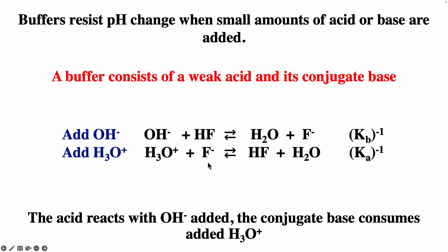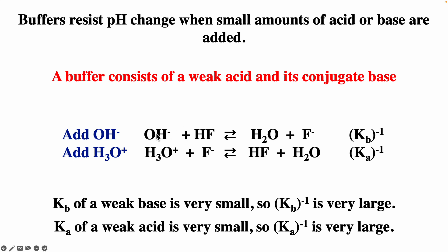You can form a buffer with HF and F⁻. Hydroxide would be consumed by HF, forming water plus F⁻. Any added hydronium ion would be consumed by F⁻, forming HF and H₂O. For the reaction with hydroxide as reactant, the equilibrium constant is 1/Kb of F⁻. Since Kb of F⁻ is very small, 1/Kb is very large, so you can treat this reaction as going to completion. Similarly, for the reaction with hydronium ion, the constant is 1/Ka of HF, which is also very large, so essentially all added hydronium ion is consumed.